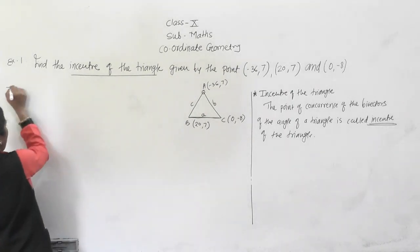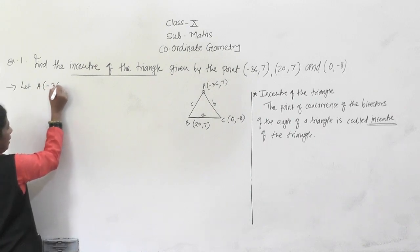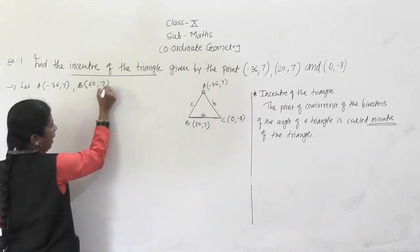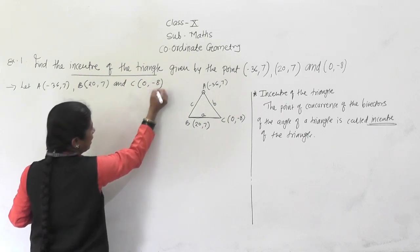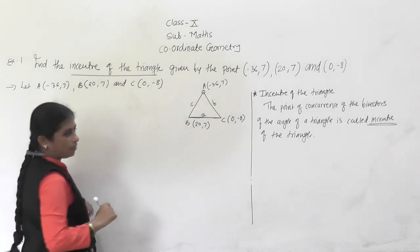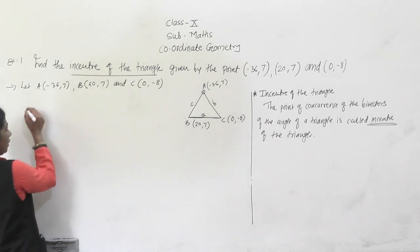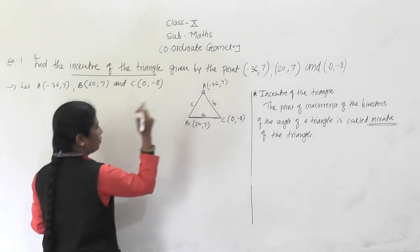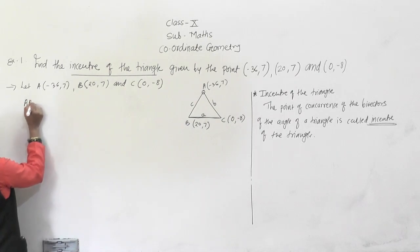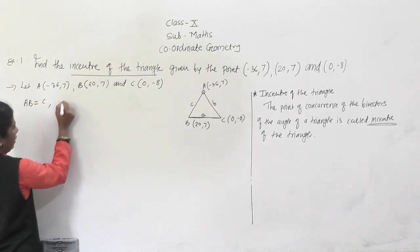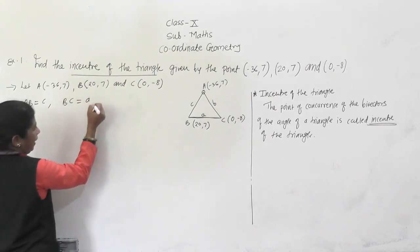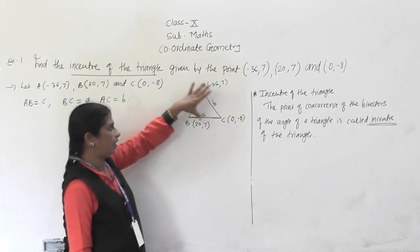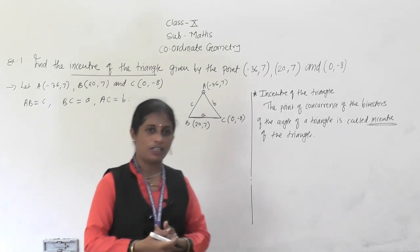Let A(-36, 7), B(20, 7) and C(0, -8) be the vertices of triangle ABC. Then BC = a, AC = b, and AB = c. We have to find the length of each side using the distance formula.